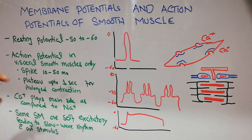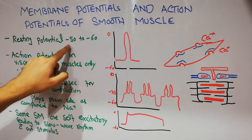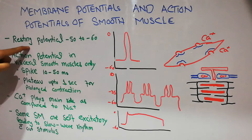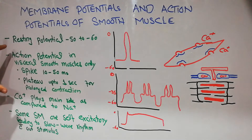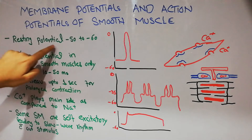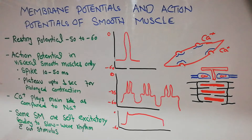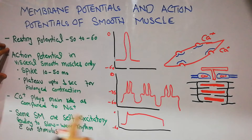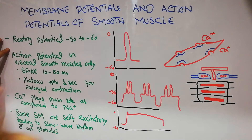In smooth muscle cells the resting membrane potential is about minus 50 to minus 60 millivolts. In skeletal muscles the resting membrane potential was about minus 90, so it is somewhat higher in smooth muscles compared to skeletal muscles. The resting membrane potential of smooth muscles basically depends on the activity of smooth muscles — whether some contraction is occurring or not — but basically the resting membrane potential at baseline gives rise to the action potential.